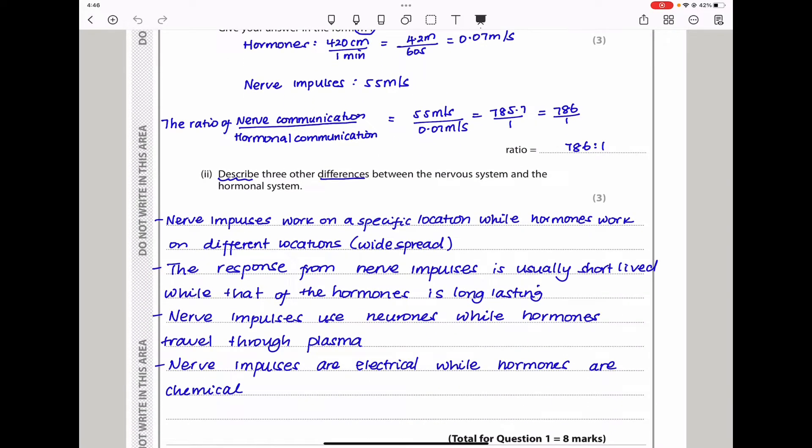Describe three other differences between the nervous system and the hormonal system. Remember, they've given us one difference, which is speed. Number one: nerve impulses work on a specific location, while hormones work on different locations. Nerve impulses are specific, they are not widespread, while the effects from hormones are widespread. Taking an example of the hormone adrenaline, it works on multiple organs - the heart, the muscles, and so on.